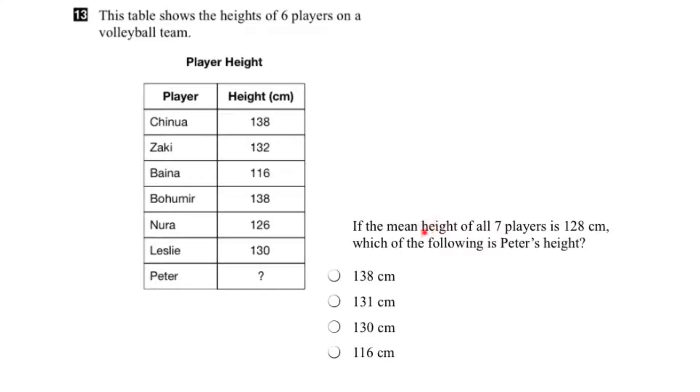So mean means the average height. What we do is add up all the heights divided by the number of players, and that will give us our average height. So our equation would look like this: the total height, adding all these together, divided by the number of players. There are 1, 2, 3, 4, 5, 6, 7 players. This would equal our mean height, which is 128 centimeters.